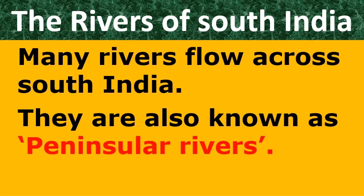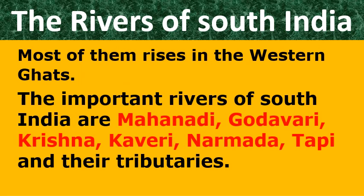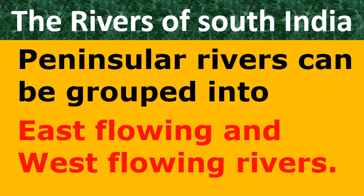Now let us know about rivers of South India. Many rivers flow across South India and they are also called Peninsular rivers. Most of them rise in the Western Ghats. For example, rivers like Krishna, Kaveri, Narmada, Tapi, Mahanadi, and Godavari are all called Peninsular rivers. Among these, Godavari, Krishna, and Kaveri all take birth in the Western Ghats.